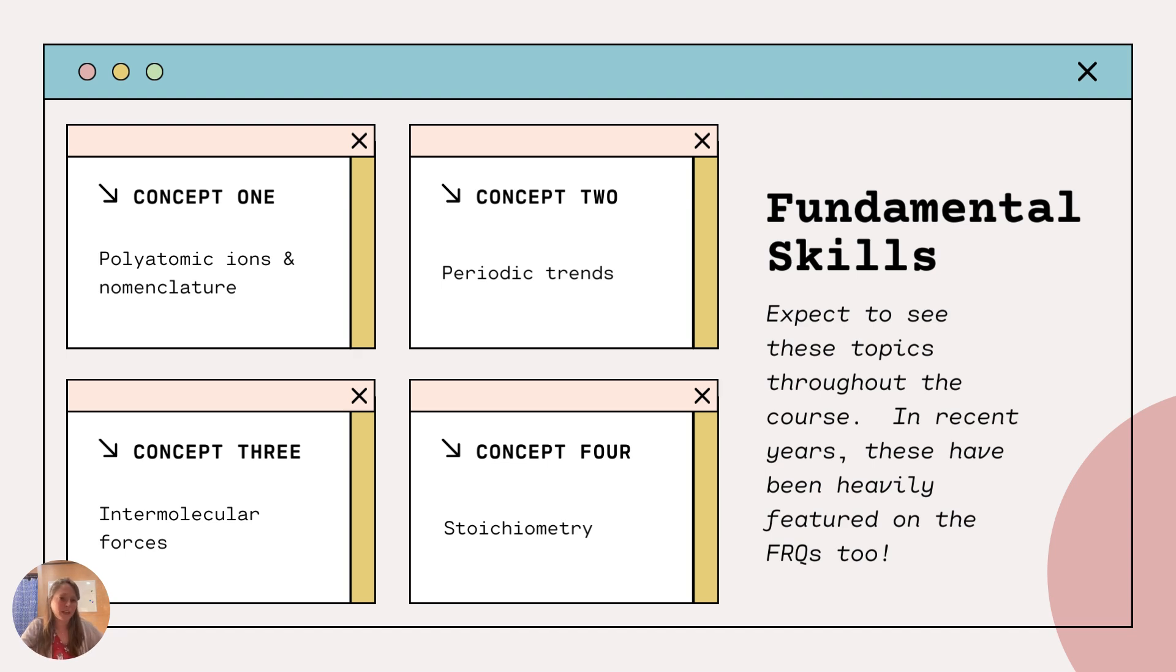So if you have a good foundation with these, it's going to benefit you. So concept one, polyatomic ions and nomenclature. Start memorizing those now. If you don't have them down, I have a free set of flashcards linked to my bio. Check it out. Spend five minutes today. It's going to benefit you all year long.